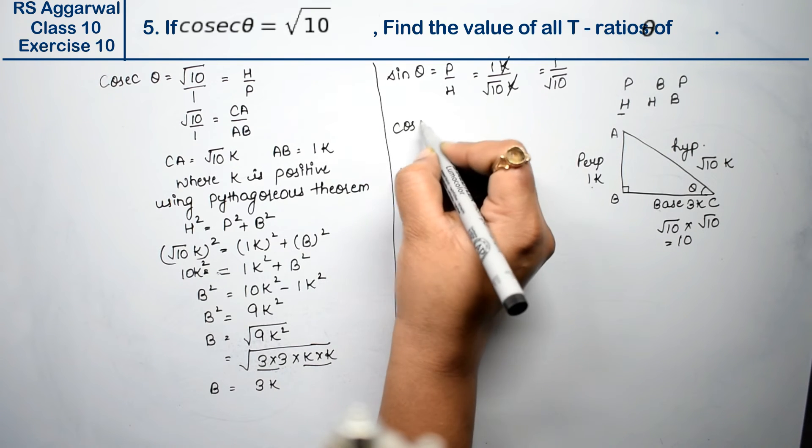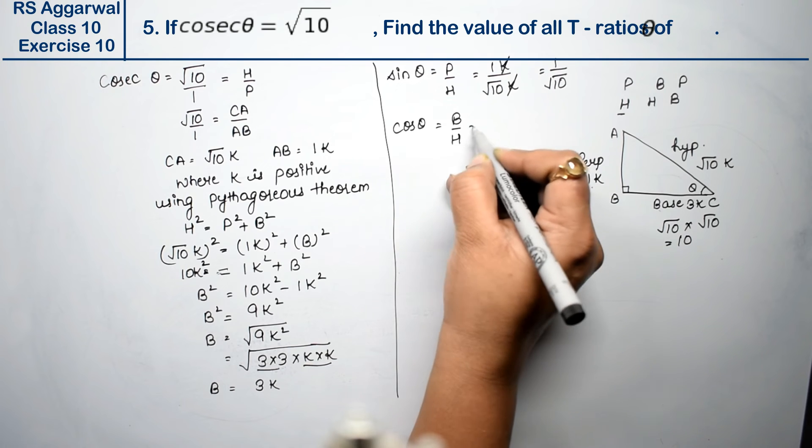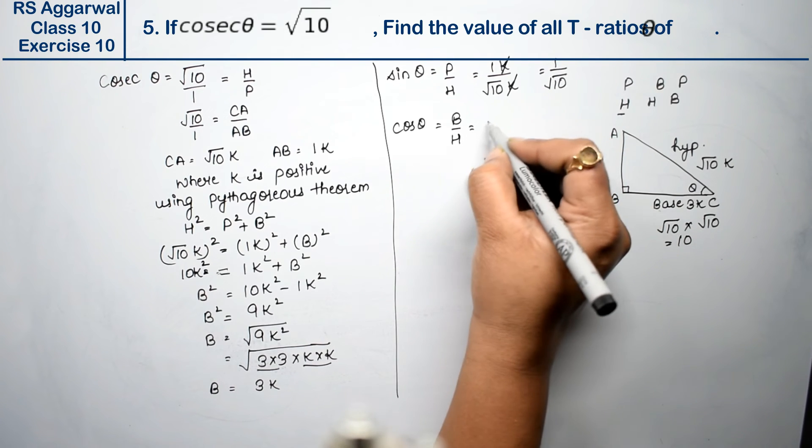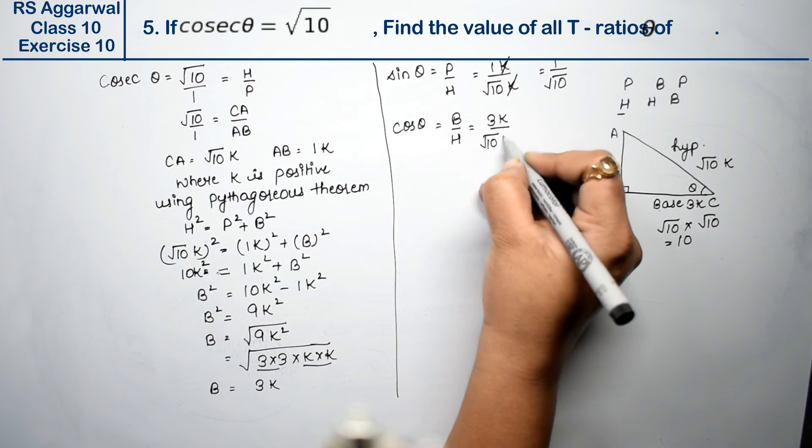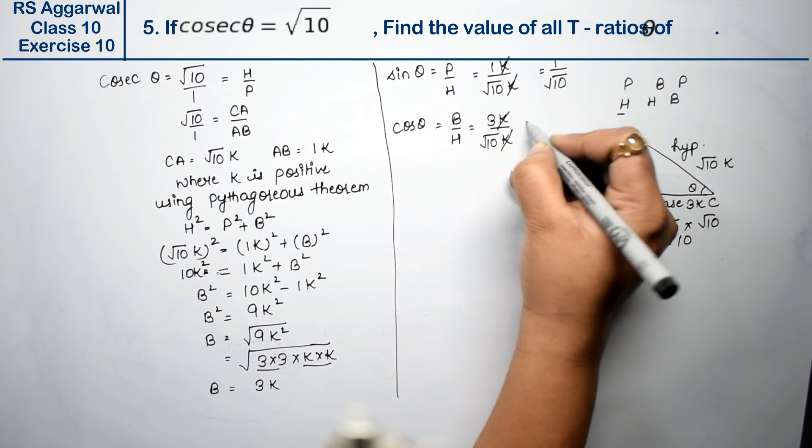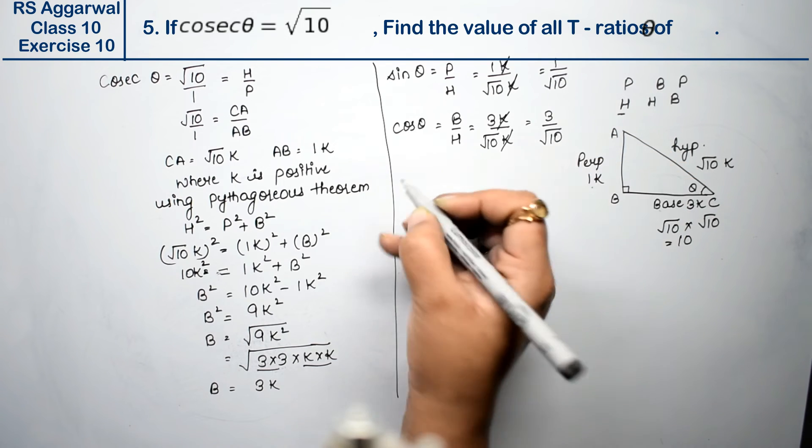Now we find cos theta. Cos theta's value is B upon H. So base is 3k and H is root 10k. K and k cancel. So this becomes 3 upon root 10.